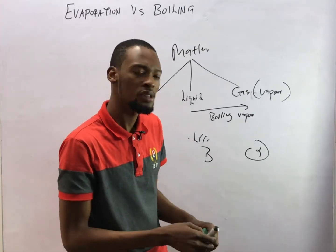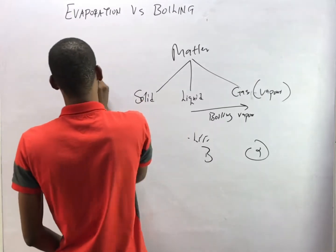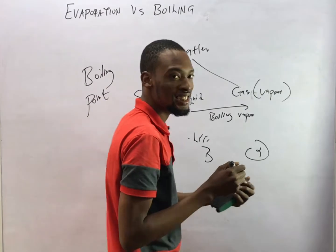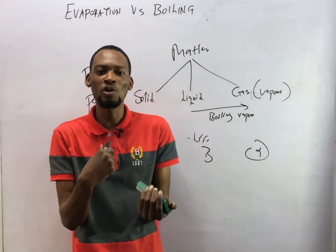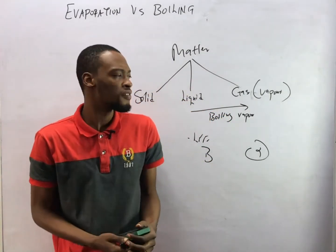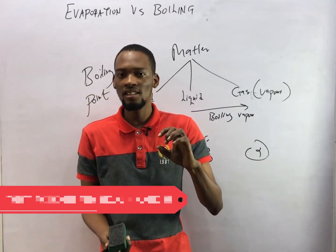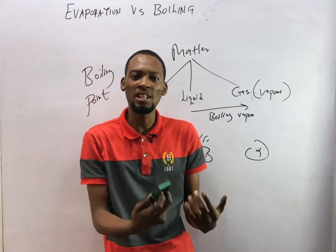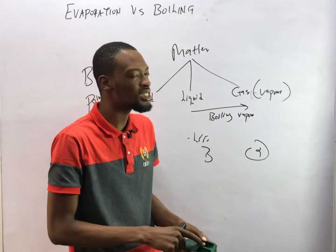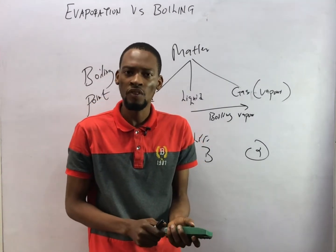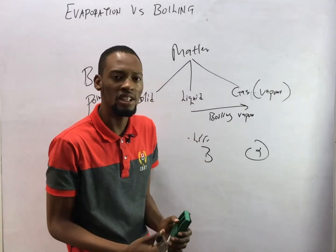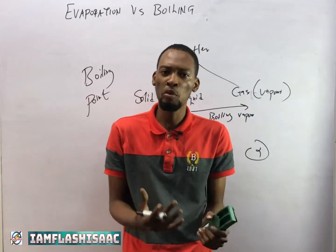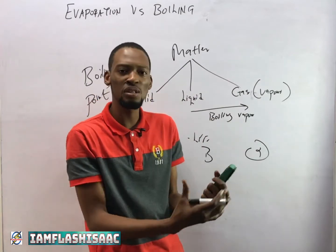Boiling occurs at a particular temperature called the boiling point. The boiling point of a substance is the temperature at which that substance begins to boil. For example, the boiling point of water is 100 degrees Celsius — so at 100 degrees Celsius, water begins to boil. A definite boiling point is a characteristic of pure substances; every pure substance has its own boiling point.